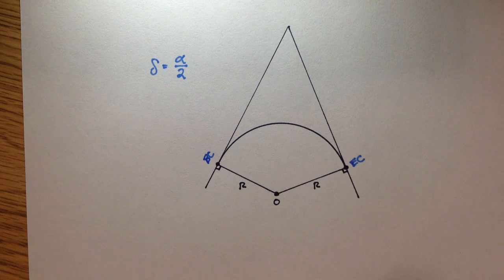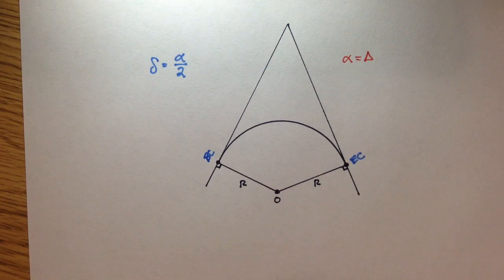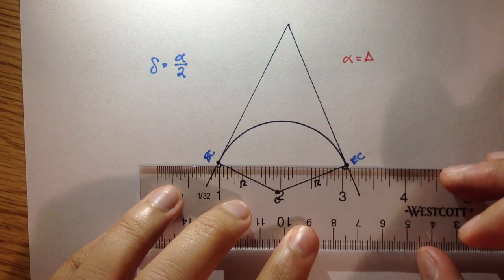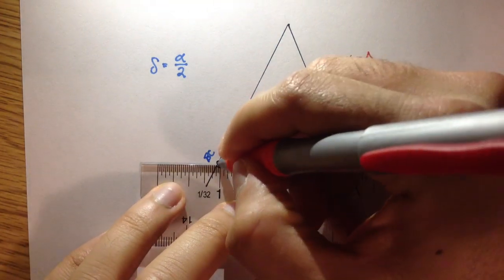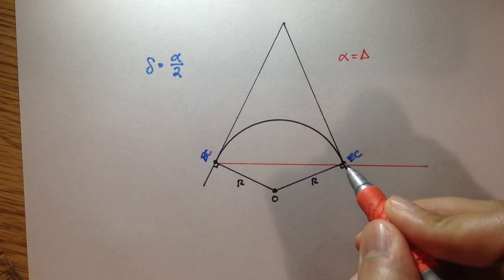And I'm going to do it for a case where alpha is actually equal to delta, big delta. And you may ask, when is that true? Well, it's true when the line you're studying or the point you're trying to stake out is the EC.